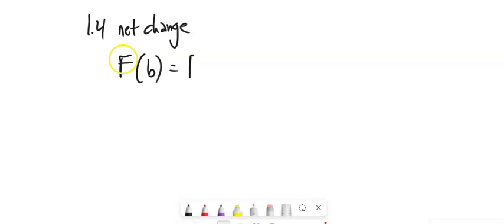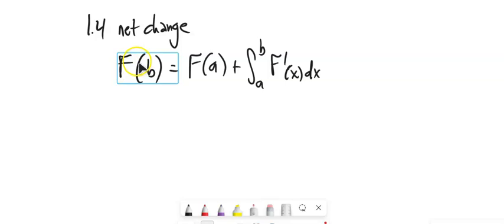is the same as that function evaluated at a plus the change that happened from a to b. So we could think of that this way. Notice this is the integral of the derivative. So really all this is saying is some function evaluated at b is that function evaluated back at a plus that change that's happened from a to b.